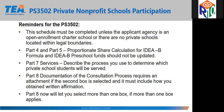Part seven services describes the process you use to determine which private school students will be served. This section was streamlined by removing check boxes and dialogue boxes for describing differences in services for parentally placed private school children with disabilities and students with disabilities enrolled in public schools. Part eight includes three choices: timely and meaningful consultation as required by 34 CFR 300.134 has occurred and the LEA has obtained written affirmation signed by representatives of participating private schools; representatives did not provide written affirmation within a reasonable period of time and documentation of attempts is attached; or consultation did not occur because representatives did not accept the invitation. Part eight now allows you to select more than one box if more than one applies.